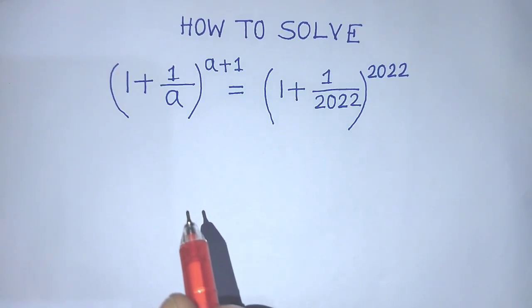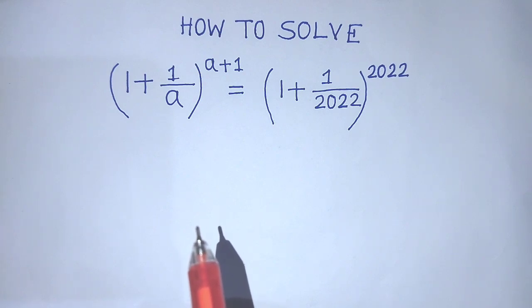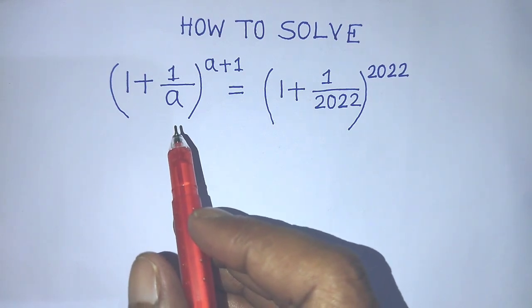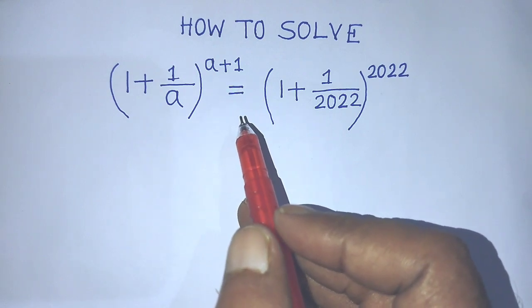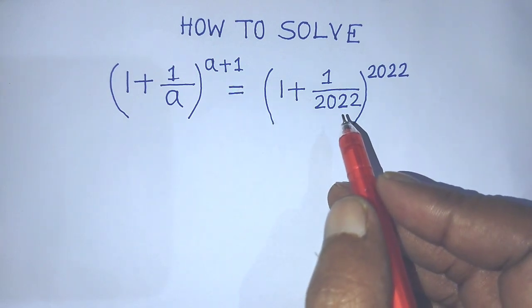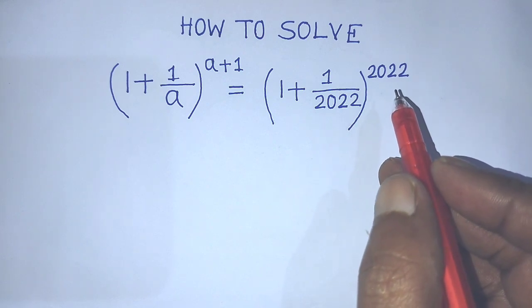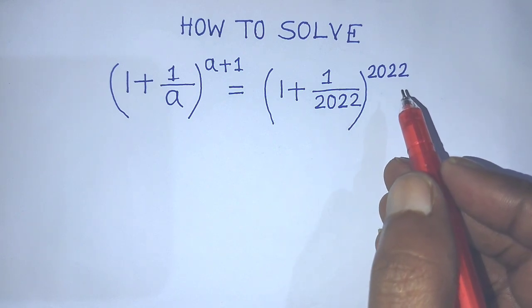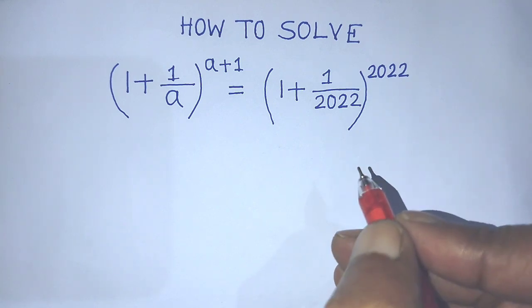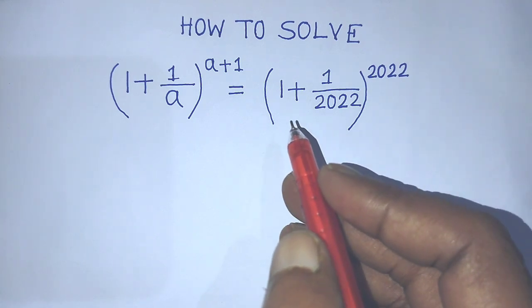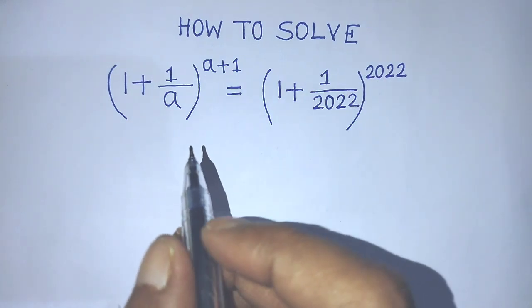Hi guys, welcome back to my channel AliMassBlog. Today our question is: (1 + 1/a)^(a+1) = (1 + 1/2022)^2022. In this video, I will tell you how to find the value of a from this equation.